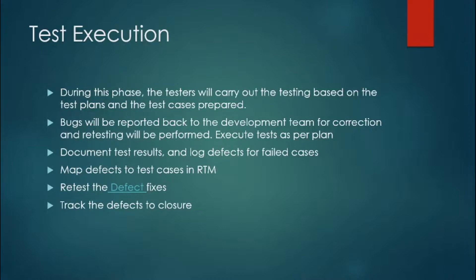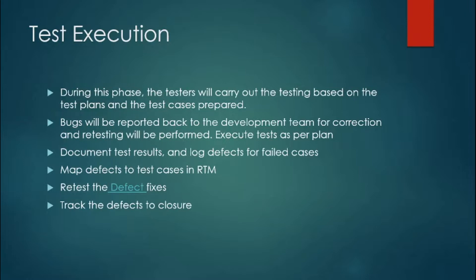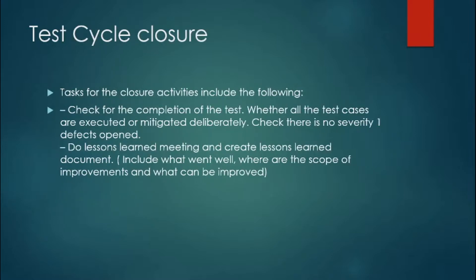You also map defects to test cases in the RTM. Once a defect is raised in HPLM or QC, it is important to link it to the test case and requirement so that the RTM reflects whether the defect was identified, fixed, and retested. Once the defect is fixed, it is retested in the Test Execution phase. Once retested and working fine, the defect can be closed — this is called dragging the defect to closure.